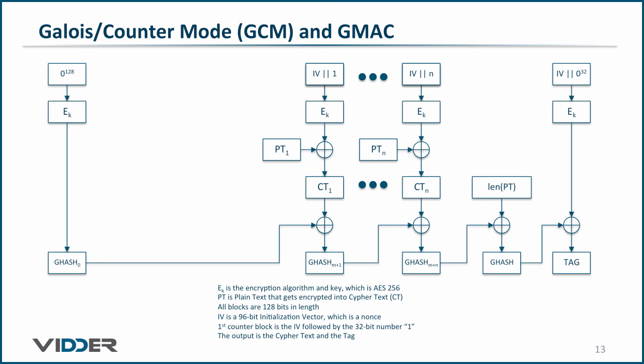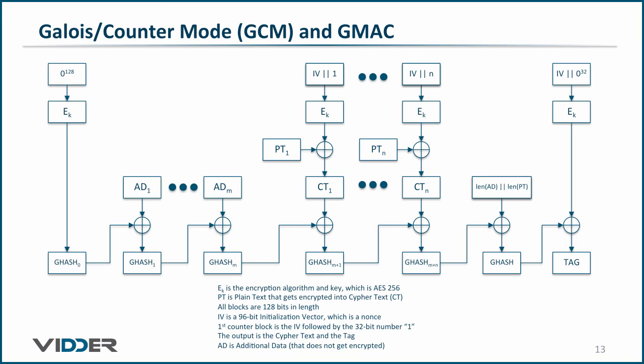This is referred to as additional data, and appears in the flowchart like this. That is, the Galois counter mode simultaneously supports the authentication of unencrypted data and the encryption and authentication of plain text data.